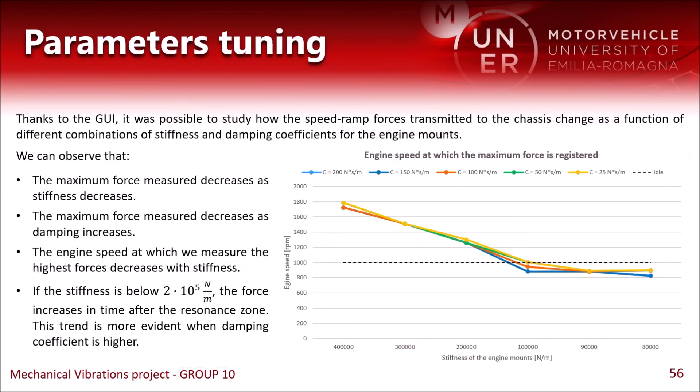We have used our app to choose the best values of stiffness and damping for the mounts of our engine, so we have tried different combinations of the two values and we have plotted the results. We can note that if the stiffness is low enough, this will cancel the importance of damping. We decided to go with a stiffness of 100,000 N per meter, because this allows us to register the maximum force during a speed ramp simulation at a speed which is lower than the idle speed, and this is the optimal condition.